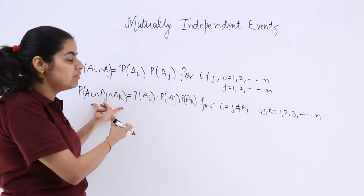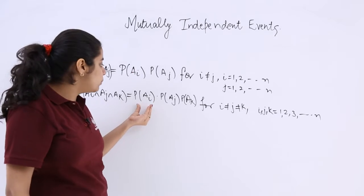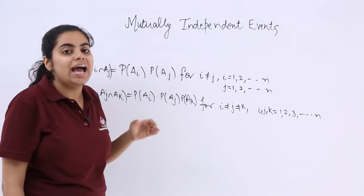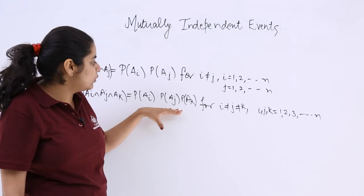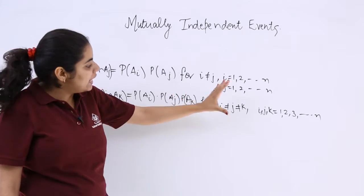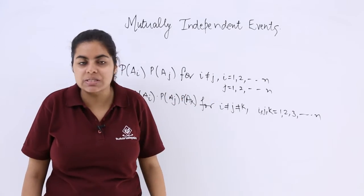the simultaneous occurrence of these three events is equal to the product of individual probabilities of these three events, and this is valid for i not equal to j not equal to k. Earlier it was for i not equal to j, and these all can belong to natural numbers.